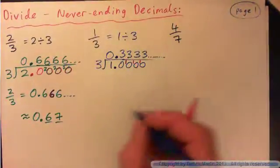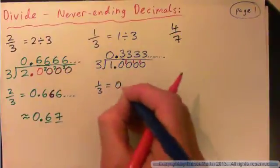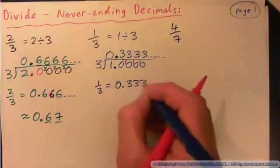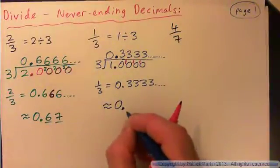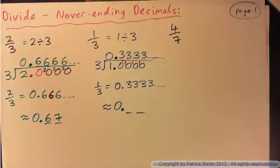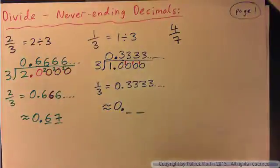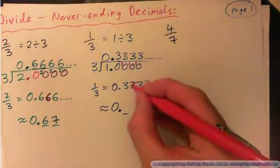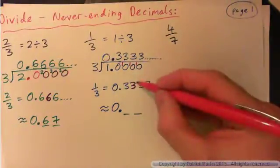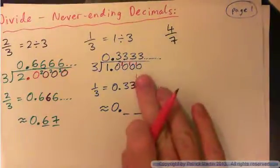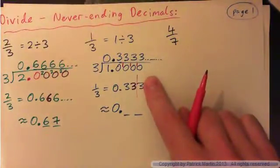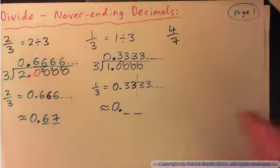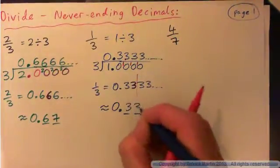That's going to keep going on forever. So what we found is 1 third is 0.33333 continuing. If I want to round that to the nearest hundredth — tenths, hundredths — I want digits up to here. The next digit is a 3, so I round down. We round it to 0.33.